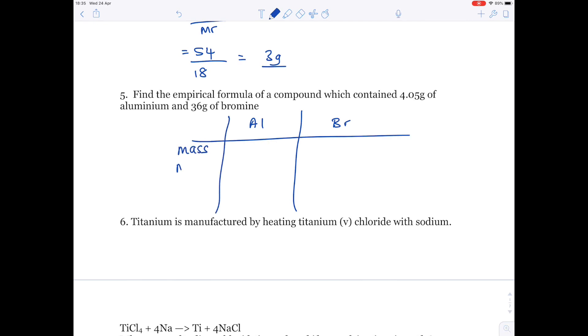We've got mass, MR, number of moles. Mass is given in the question: 4.05 grams of aluminium, 36 grams of bromine. The MR of aluminium, use your periodic table, you'll see it's 27. The MR of bromine is 79.